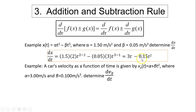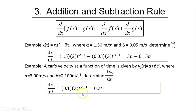That simplifies to 3t minus 0.15t squared. Next example: a car's velocity as a function of time is given by vx equals alpha plus beta times t squared, where alpha equals 3 and beta equals 0.1. Find dvx over dt. The derivative of the constant alpha is zero. The derivative of beta t squared is beta times 2 times t, giving 0.2t. This dvx over dt gives you acceleration.